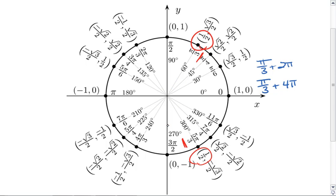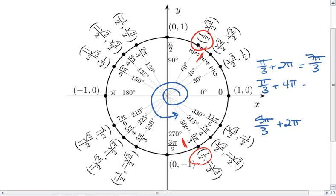We can do the same thing with the 5 pi-thirds. We could make a full lap, and then hit 5 pi-thirds. That angle would be 5 pi-thirds plus 2 pi. We could also rewrite these a little bit if we wanted to. This would be 7 pi-thirds. This one would be 13 pi-thirds. This one is 11 pi-thirds.